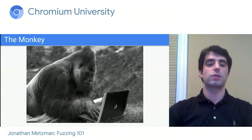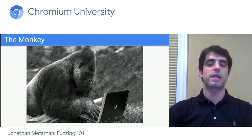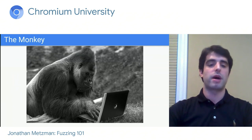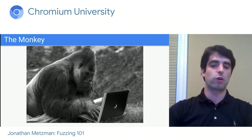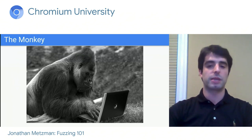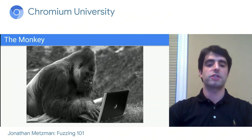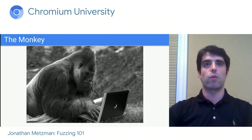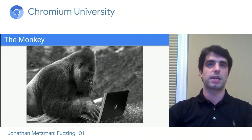One of the earliest fuzzing tools was something called the monkey. The monkey tested GUI programs on Mac OS by sending them things like random clicks and key presses in order to get those GUI programs to crash — similar to if a monkey were playing at the computer, mashing on the keyboard and clicking randomly. The fuzzers we're discussing today work rather differently, but the basic idea of crashing programs through randomized and unexpected inputs is essentially the same.